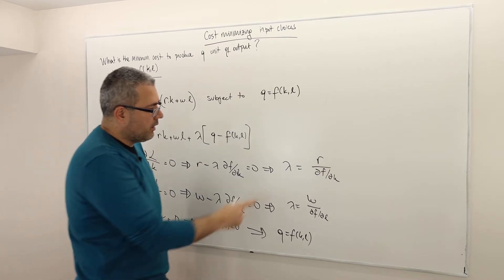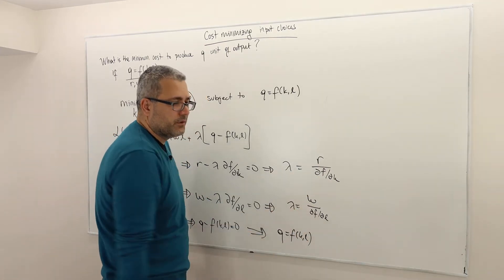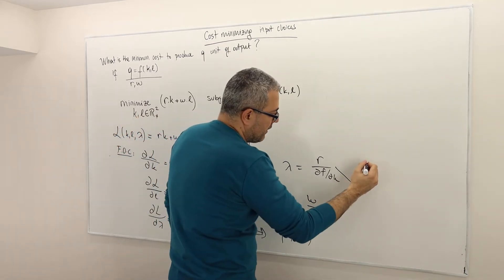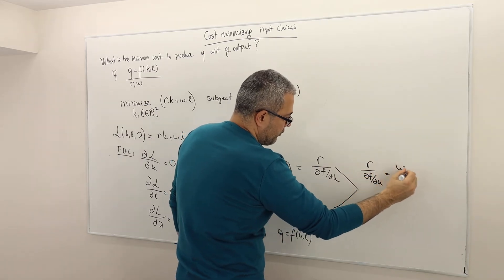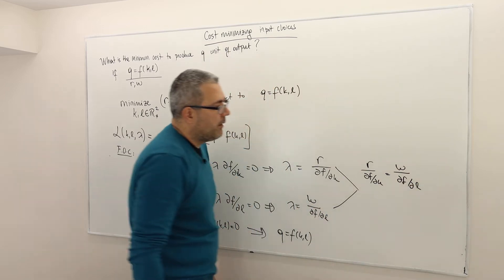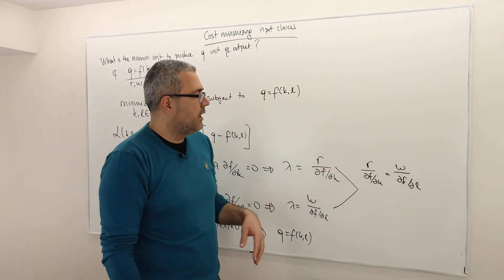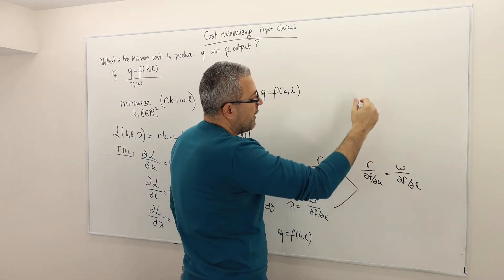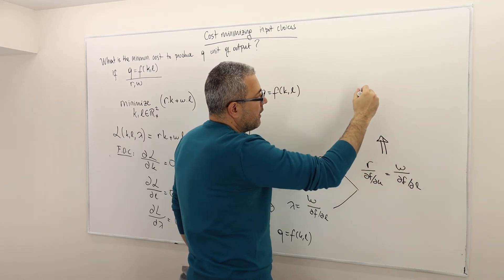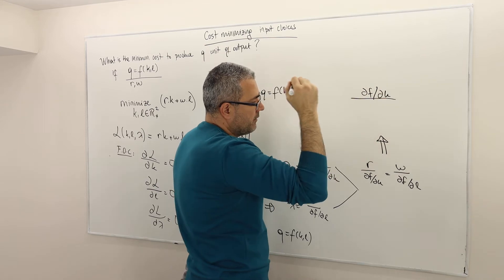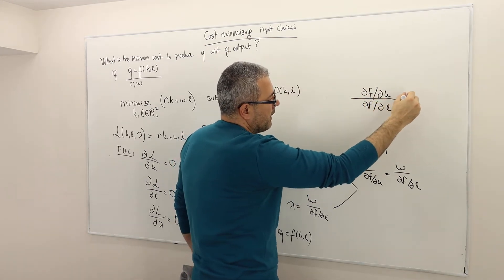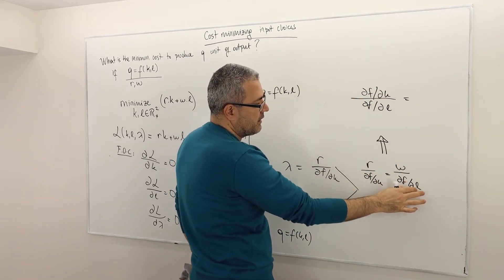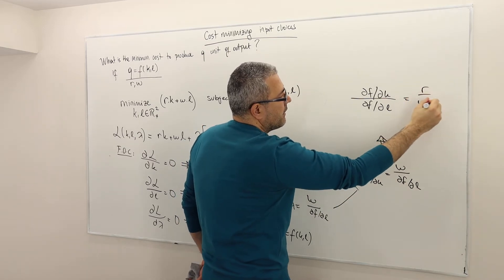Simplifying these, we get lambda equals R divided by del F del K, and also lambda equals W divided by del F del L. Setting these two equal gives: R divided by del F del K equals W divided by del F del L. Doing the cross product, this is equivalent to: del F divided by del K, divided by del F divided by del L, equals R divided by W.